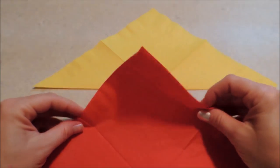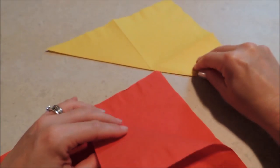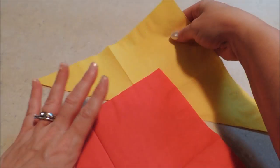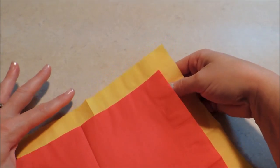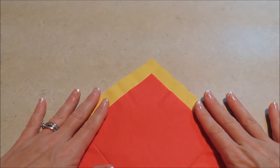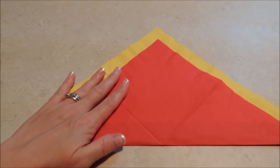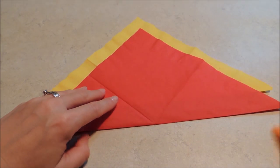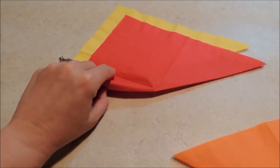So, next we'll bring in our red, and we're going to open it and kind of slide our yellow down inside of there until we've got about a half inch or so of a border. And then we're going to come with our orange next, and do the same thing.